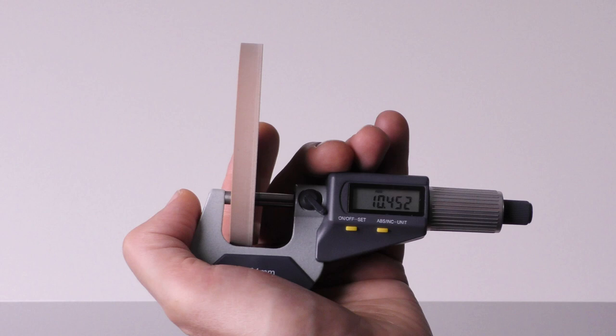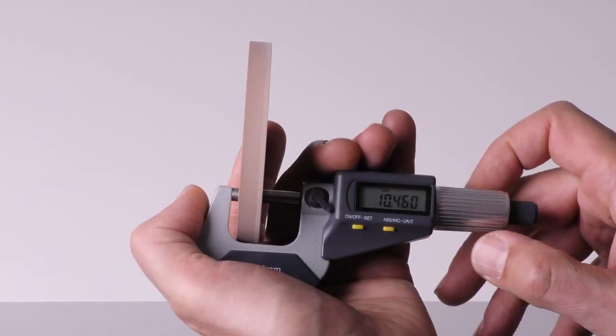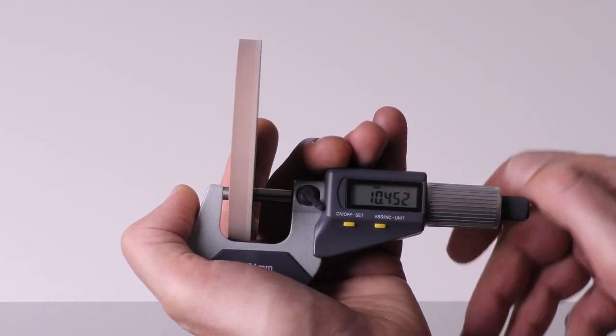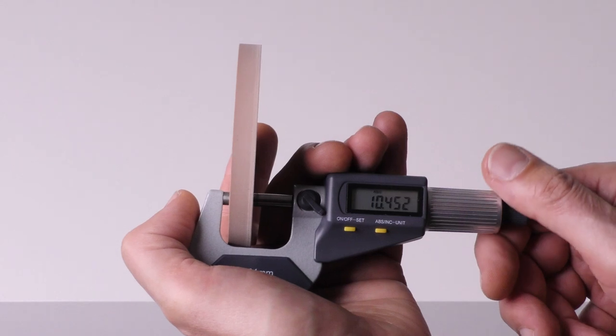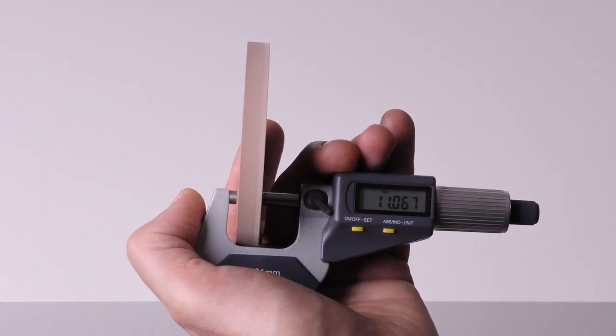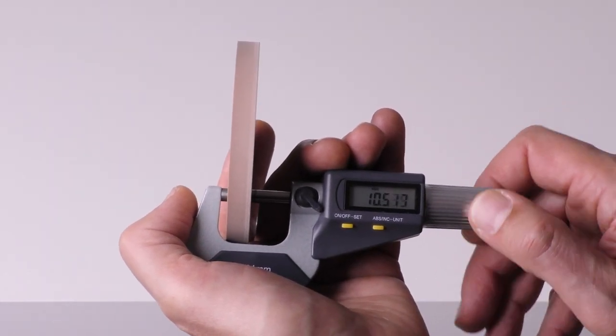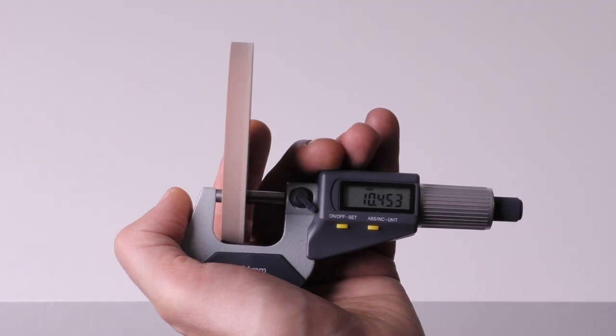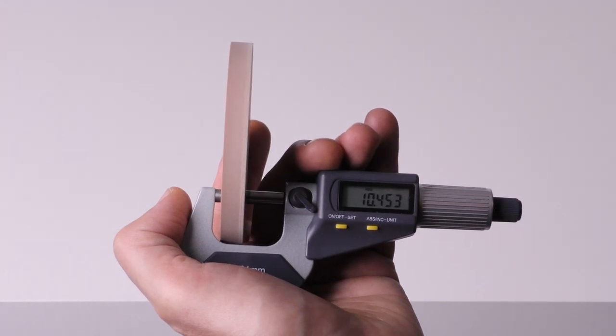If you continue to turn the ratchet, the distance value on the display shouldn't change. Notice: Make sure that the measuring surface lies flat on the specimen and not slanted. Measure each point at least twice to make sure that the measured values are correct. It is very important that you always follow these steps when measuring, as incorrect measurement is the greatest source of error when using the micrometer. This leads to incorrect calibration results.